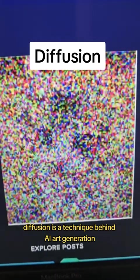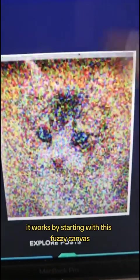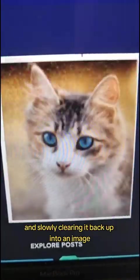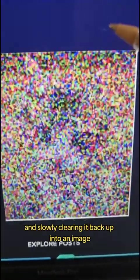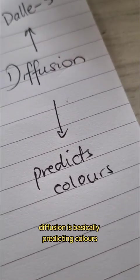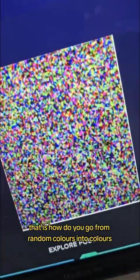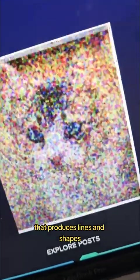Diffusion is a technique behind AI art generation. It works by starting with this fuzzy canvas and slowly clearing it back up into an image. Diffusion is basically predicting colors—that is, how do you go from random colors into colors that produce lines and shapes.